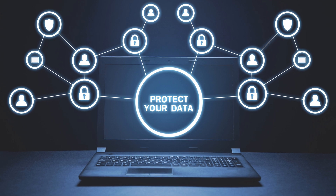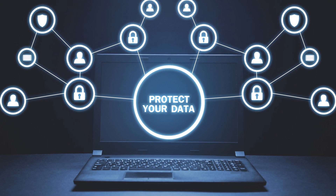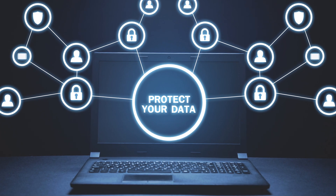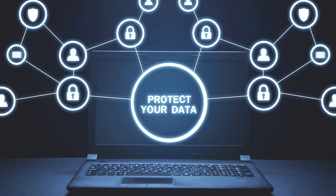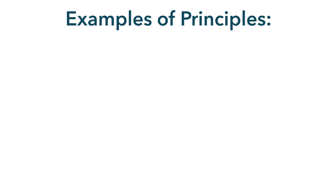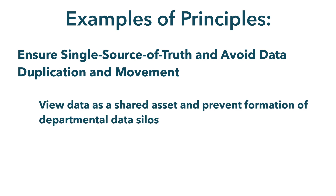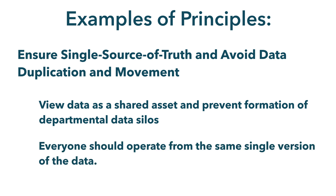It is possible to always have other controls like policies, but if all three data domains work well together, principles are the natural controls for data architecture, whereas policies are the natural controls for data governance. A principle could be: ensure single source of truth and avoid data duplication and movement, with two sub-principles: view data as a shared asset and prevent formation of departmental data silos, and everyone should operate from the same single version of the data.